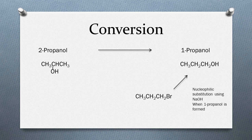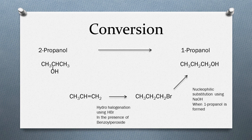The next step is converting propene to 1-bromopropane, and that reaction takes place in the presence of benzoyl peroxide. Because of the peroxide effect, the bromine gets attached to the first carbon atom, giving 1-bromopropane. If benzoyl peroxide was not used, we would have obtained 2-bromopropane, which is not the desired product in this reaction.